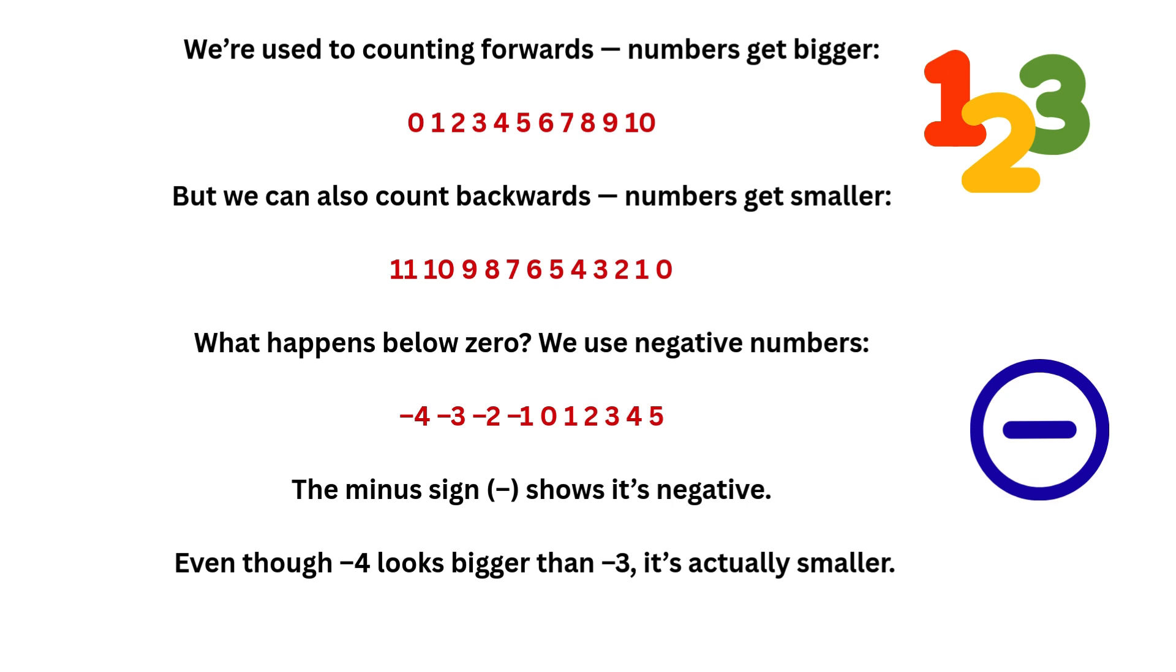Now what happens when we go below zero? When we go below zero we use negative numbers. The minus sign shows us that the number is a negative number. So even though you might think minus four looks bigger than minus three, it's actually a smaller number.